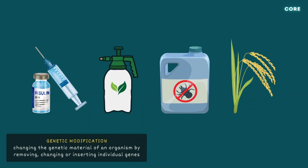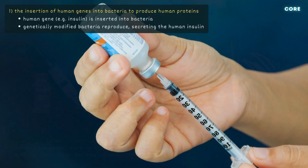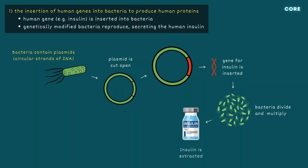There are four examples of genetic modification that you need to know about. The first is the insertion of human genes into bacteria to produce human proteins. Bacteria contain tiny circular strands of DNA called plasmids, which can be cut open and human genes inserted. The modified bacteria then divide and grow, synthesizing the protein that the human gene codes for. If the DNA contains a gene that codes for a protein like insulin, the bacteria will synthesize insulin, which can then be extracted and used by humans.